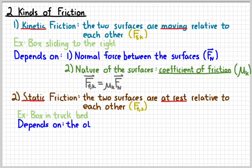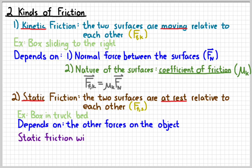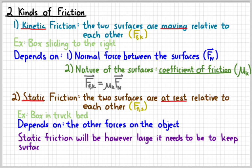For static friction, it's a bit more complicated. Static friction is lazy — it's only going to push as hard as it needs to in order to keep something at rest, so it depends on what other forces are present. The basic idea is that static friction will be however large it needs to be, and in whatever direction it needs to be, to keep the surfaces at rest. So it's variable, and we use free body diagrams and net force equations to find it.